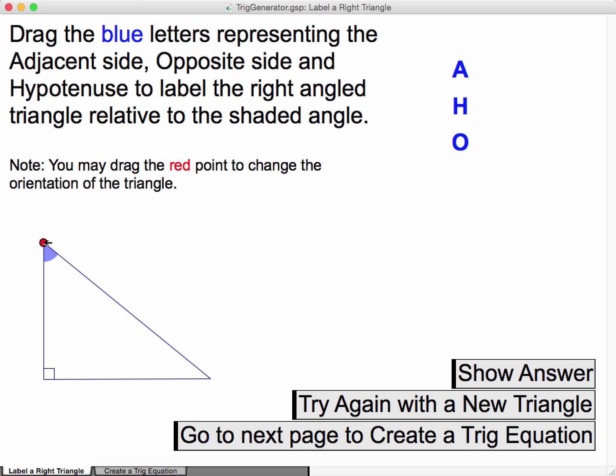And so it's pretty simple. You're given a right-angled triangle, you're given an angle as a reference point, and then you have to drag the appropriate side names to where they are.